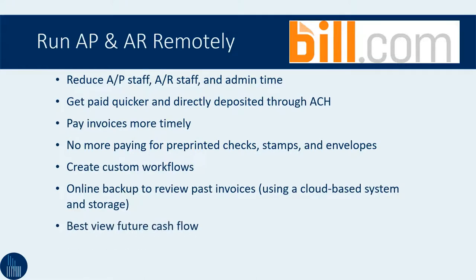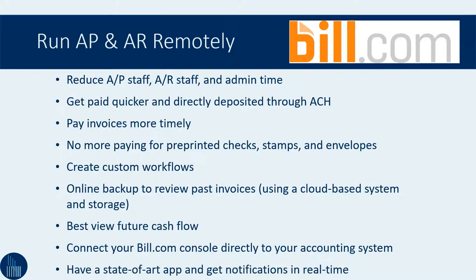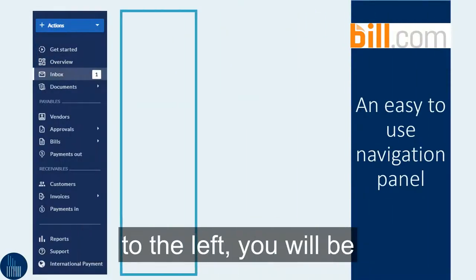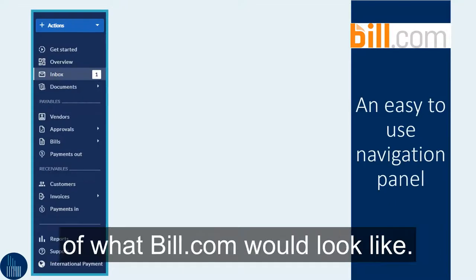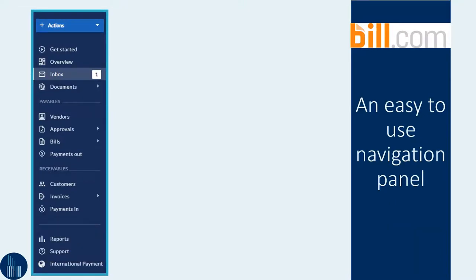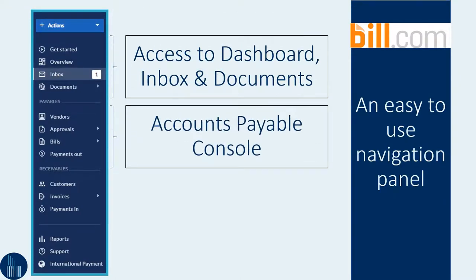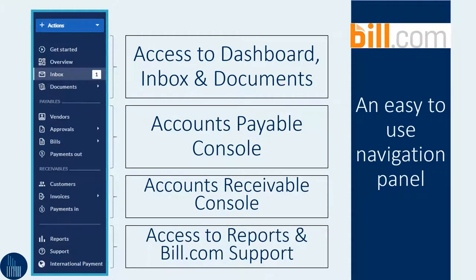You have the best view of future cash flow. You can also connect your bill.com console directly to your accounting system, and you can have a state-of-the-art app and get notifications in real time. If you notice the screenshot to the left, you will be able to see a quick navigation panel of what bill.com would look like. You have access to a dashboard, an inbox to view documents, your accounts payable console, your accounts receivable console, and also reports for your viewing.